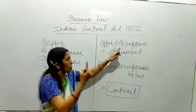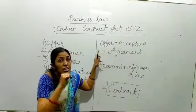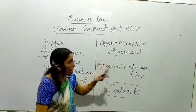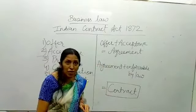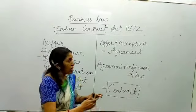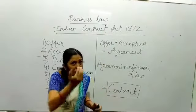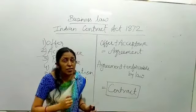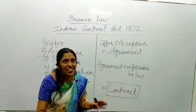Yahan par offer dene wala vachan de raha hai ki main apni 10 lakh ki property aapko bechunga, aur accept karne wala vachan de raha hai A ko ki main aapko 10 lakh rupye uske badle mein dunga. Theek hai. Ab jab badle ki baat aayi, toh consideration yahan pe aa raha hai. Consideration ka matlab hai something in return — jaise 10 lakh rupye ki property maine aapko bechi, toh uske badle mein aap mujhe 10 lakh rupye de rahe ho, aur aapke 10 lakh ke badle mein aapko 10 lakh rupye ki property. Is term ko kaha jata hai consideration.